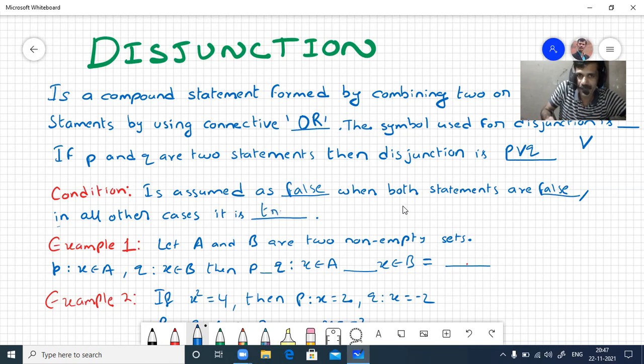We'll take one example. Let A and B be two non-empty sets, and p, the first statement, is defined as x belongs to A. That means first set. Q: x belongs to B, that belongs to another set. Then how can we write p or q? X belongs to A or x belongs to B.